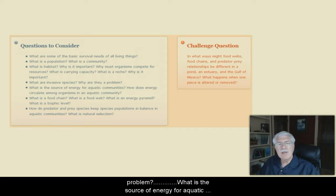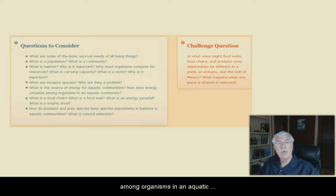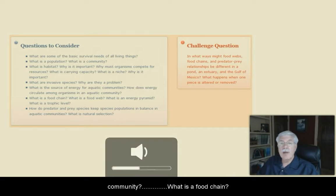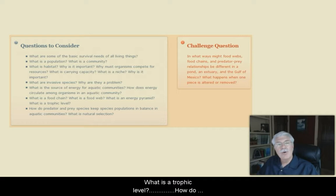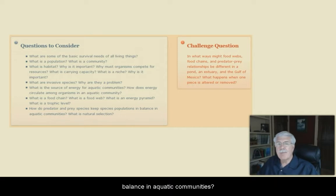What is the source of energy for aquatic communities? How does energy circulate among organisms in an aquatic community? What is a food chain? What's a food web? What's an energy pyramid? What's a trophic level? How do predator and prey species keep species populations in balance in communities? What is natural selection?